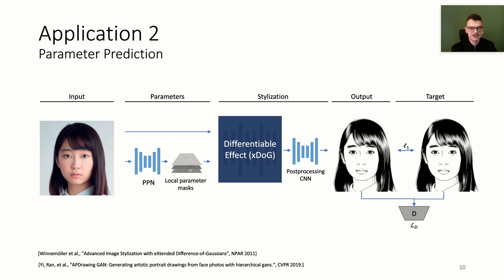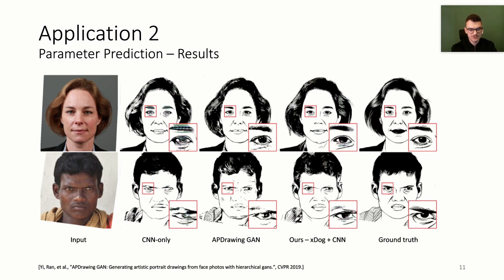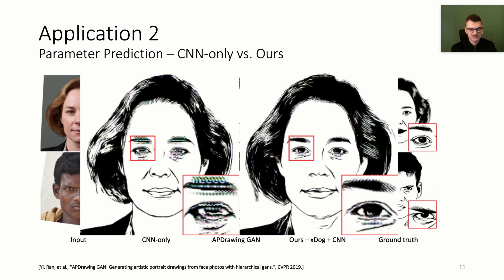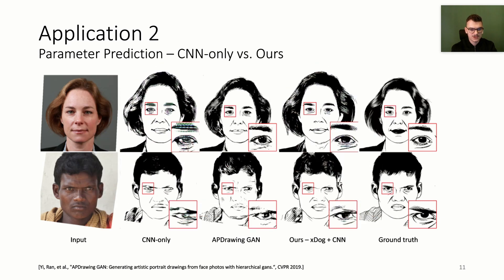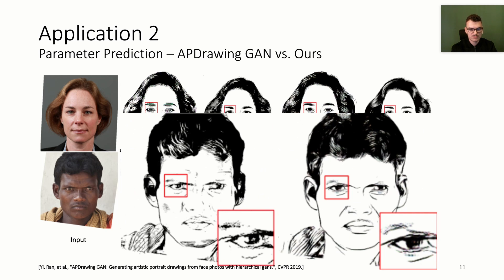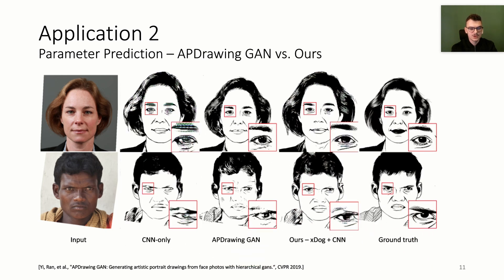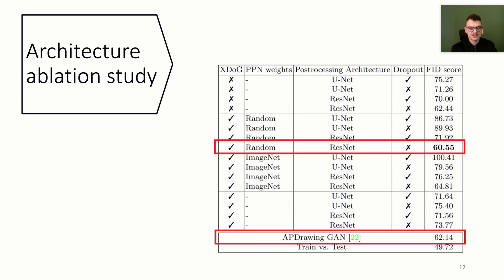We use a single-GAN loss and an L1 loss to train on the AP DrawingGAN dataset. When we visually inspect the results, we find that our model outperforms a plain CNN and has fewer artifacts. Our results appear also more crisp than the results by AP DrawingGAN. We conduct an extensive ablation study and find that our best-performing model outperforms AP DrawingGAN with respect to the FID metric.